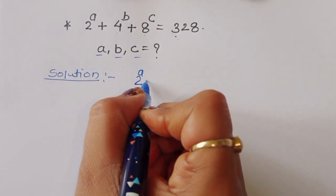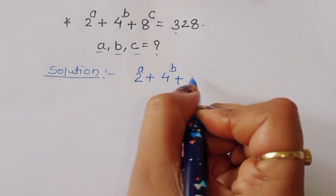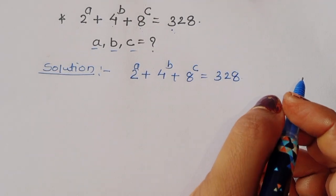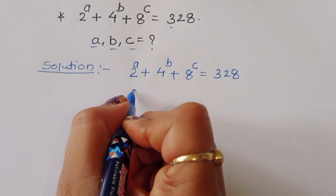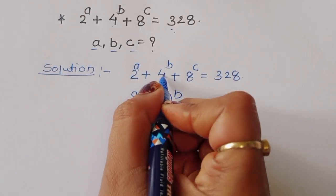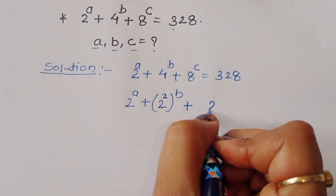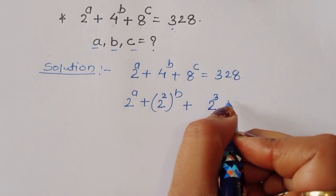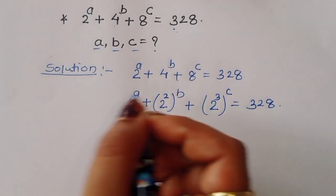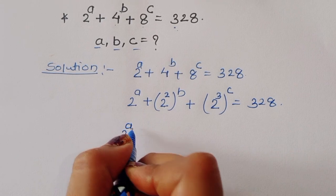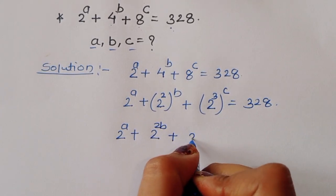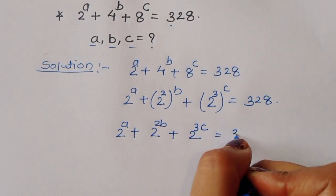First, what is given: 2 power A plus 4 power B plus 8 power C is equal to 328. We can rewrite this as 2 power A plus 2 power 2B plus 2 power 3C is equal to 328, since 4 = 2² and 8 = 2³.